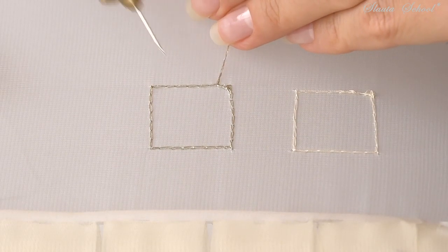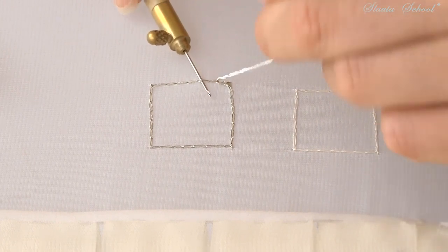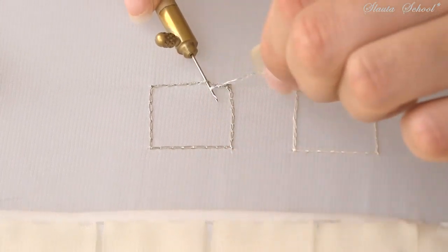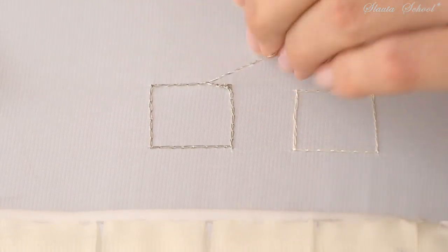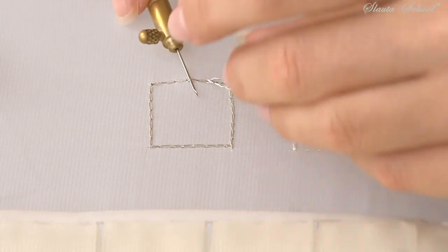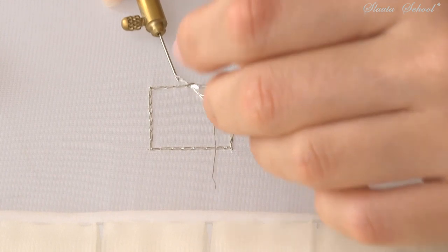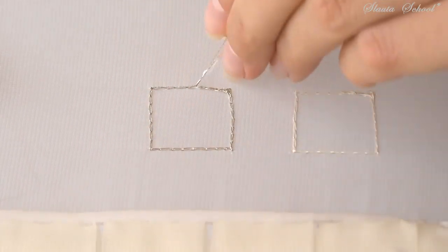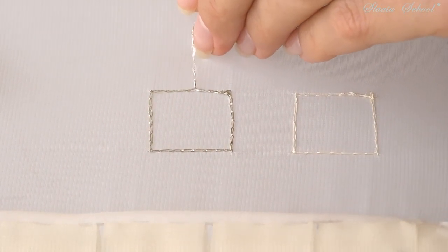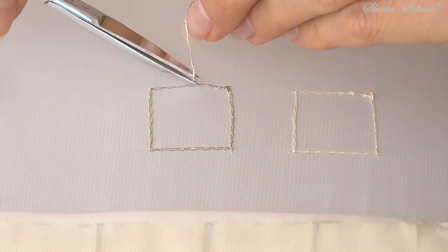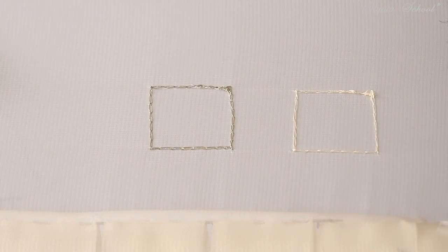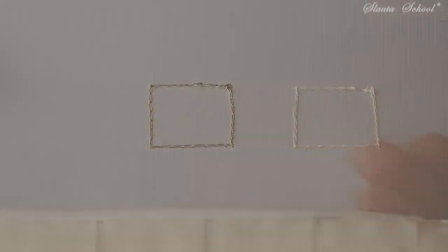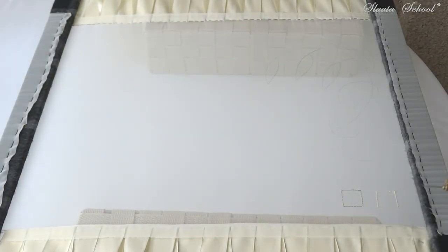In order to secure the edges properly, wrap the existing threads around the embroidered chain two or three times. And then you may cut the threads on the base. Thus I would like you to exercise making precise corners while embroidering the squares.